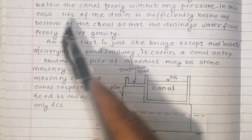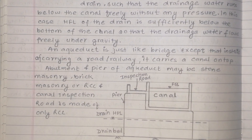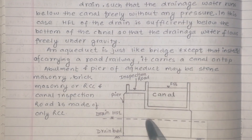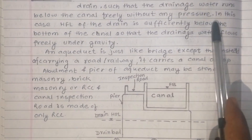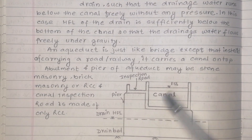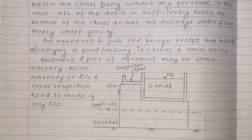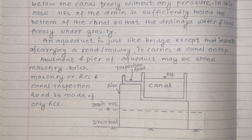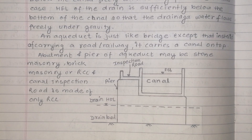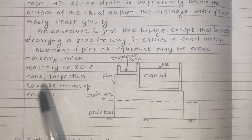In an aqueduct, the canal is taken over the natural drain. In this case, the HFL of the drain is sufficiently below the bottom of the canal bed, so that the drain water flows freely under gravity. An aqueduct is just like a bridge, except that instead of carrying a road or railway, it carries a canal on top. The abutment and piers of the aqueduct may be of stone masonry, brick masonry, or RCC, and the canal inspection road is made of only RCC.